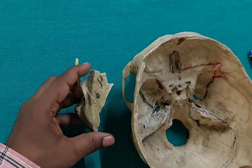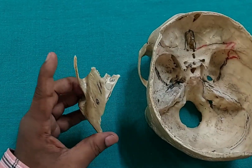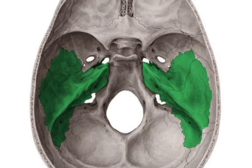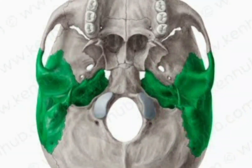Good evening students. Today I will discuss another important cranial bone which is the temporal bone. This bone is situated between the sphenoid bone in front and occipital bone behind, and it is present on each side of the midline forming the base of the skull.